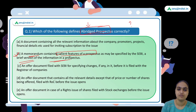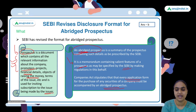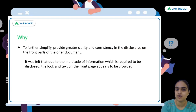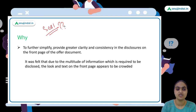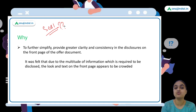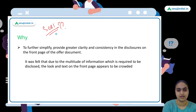SEBI modified the abridged prospectus format because the existing structure had too much information, making it overcrowded — especially the front page of the offer document. There was a need to simplify it and bring more clarity and consistency, which is why SEBI suggested modifications to the format.